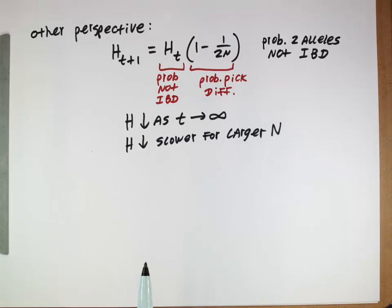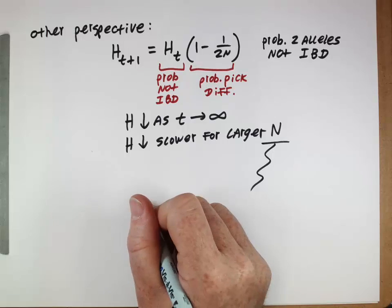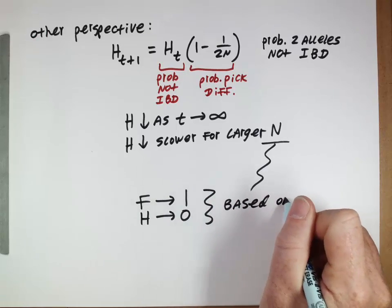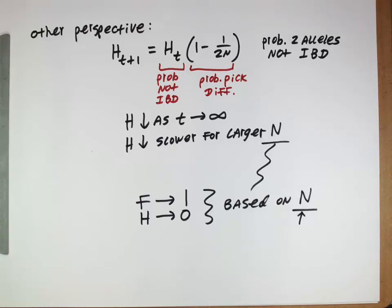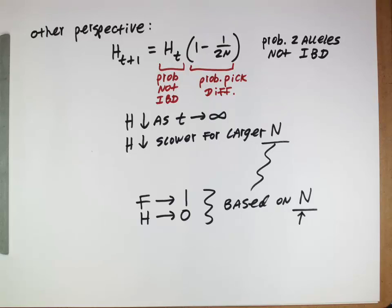The next thing we'll look at is this N that determines how fast F goes to one or how fast H goes to zero — both based on population size. It turns out population size itself can be more complex. As we saw with an inbreeding population, it acted as if it had a smaller population in the sense that it lost genetic diversity more quickly. So our next topic is to look at different factors that make populations act as if they have population sizes different from just the number of individuals — either losing genetic diversity more quickly or preserving it for longer.